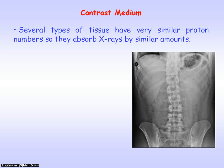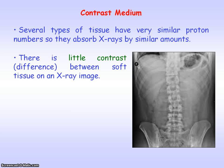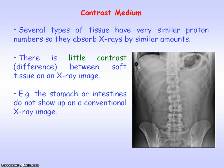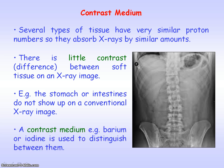Because soft tissues have similar proton numbers, they absorb x-rays by similar amounts, so there's little contrast between different soft tissues on an x-ray image. That's why on a conventional x-ray image you cannot see soft tissue very well — for example, the stomach or the intestines cannot be seen. That's why a contrast medium, for example barium or iodine, is needed to distinguish between the different soft tissues.